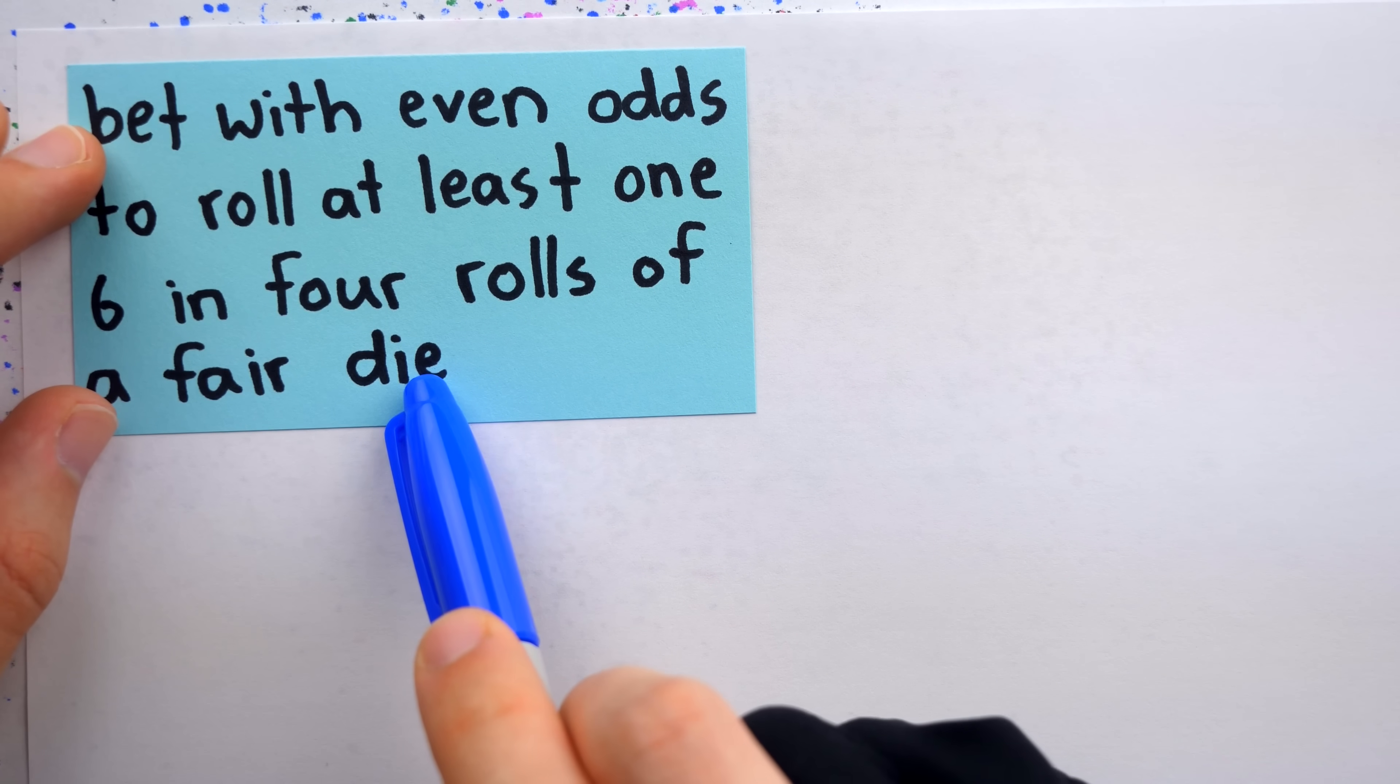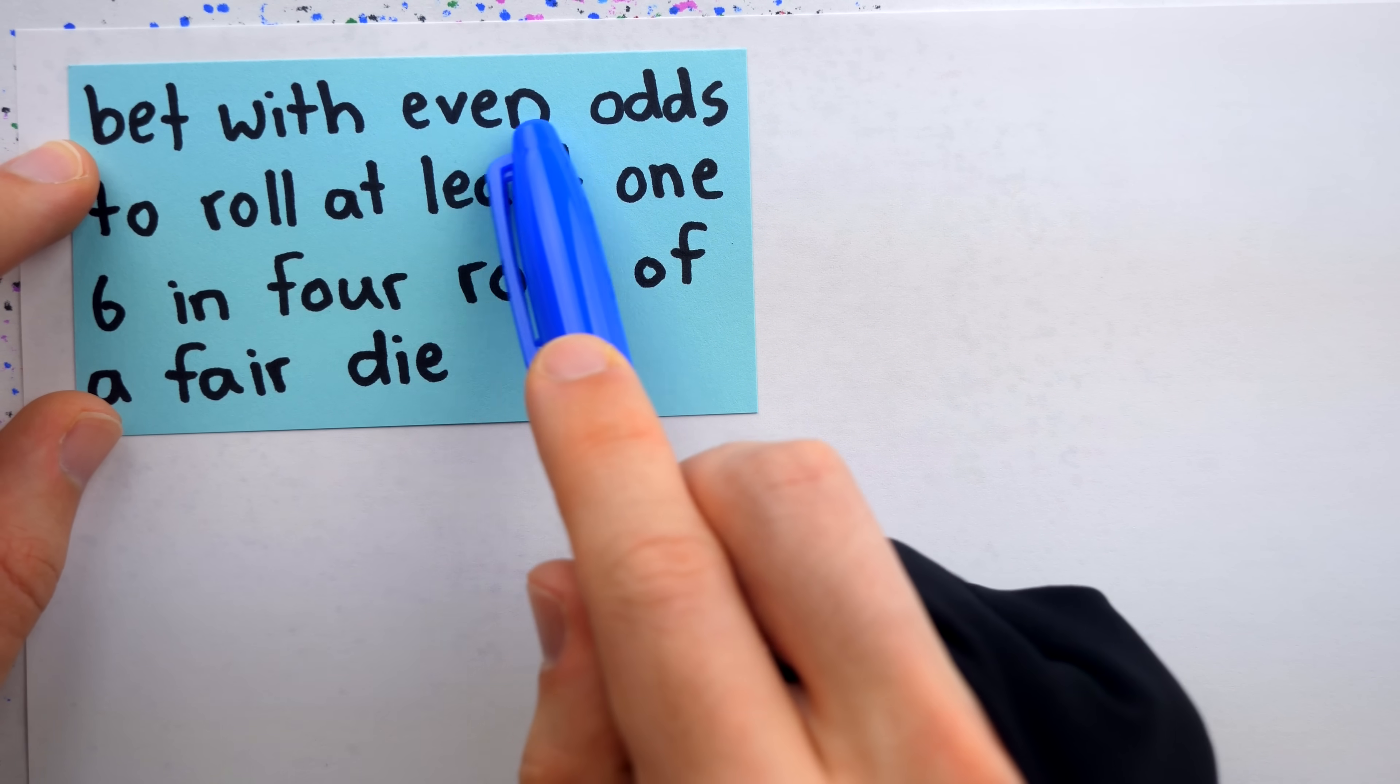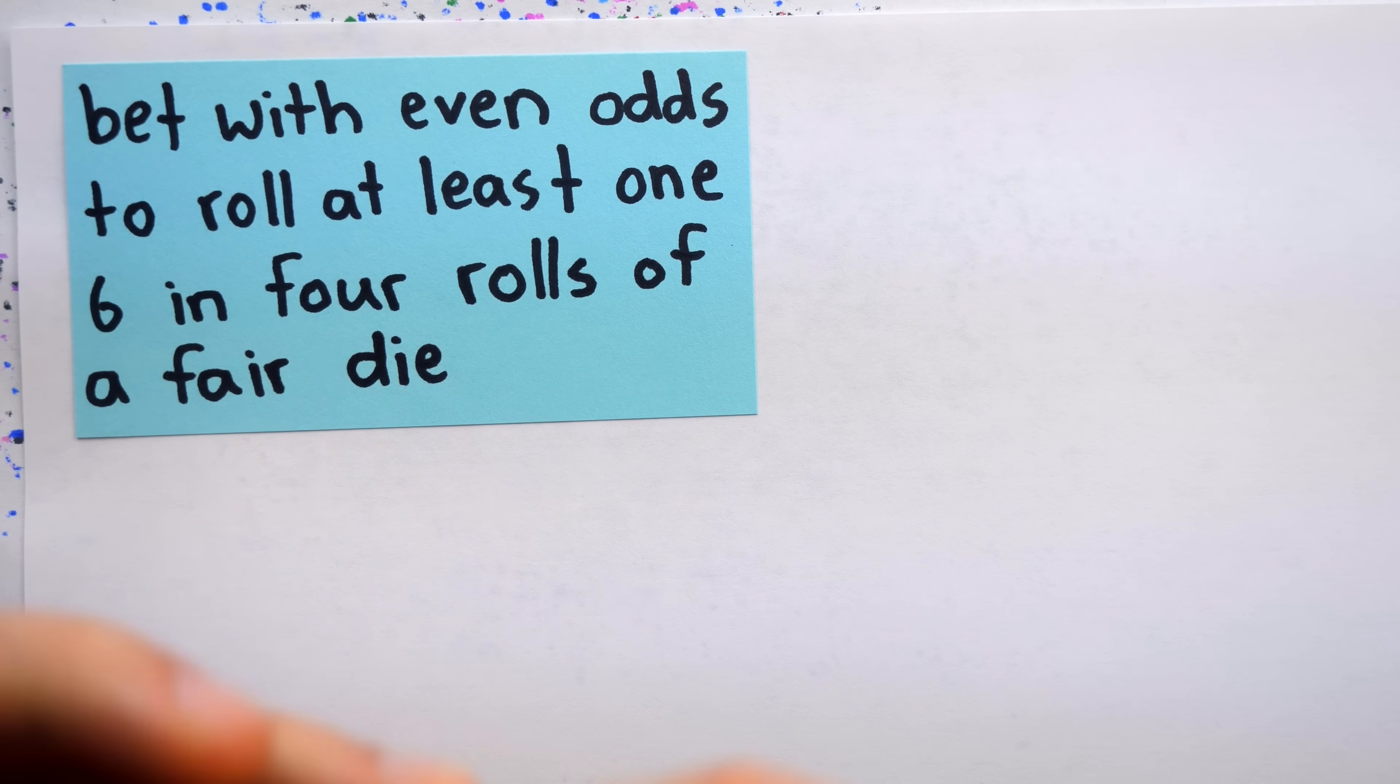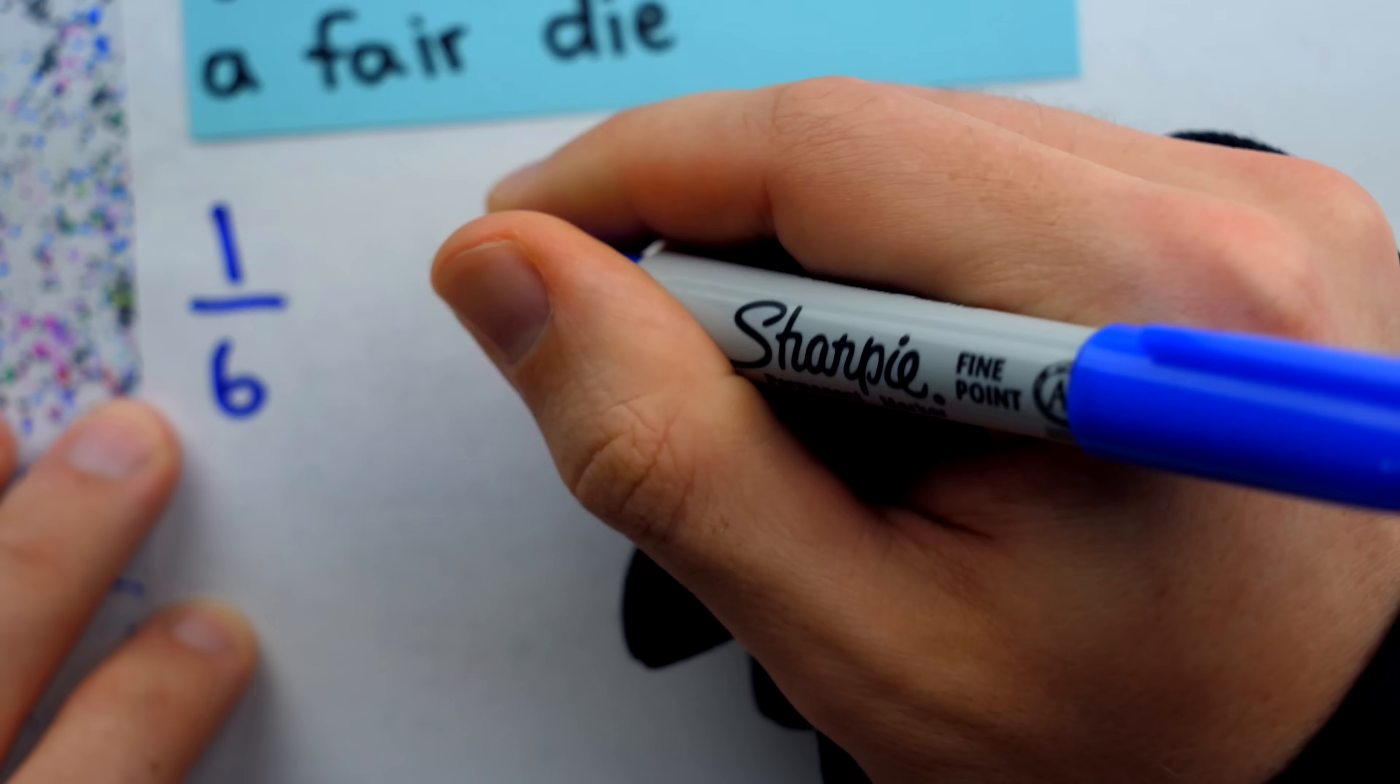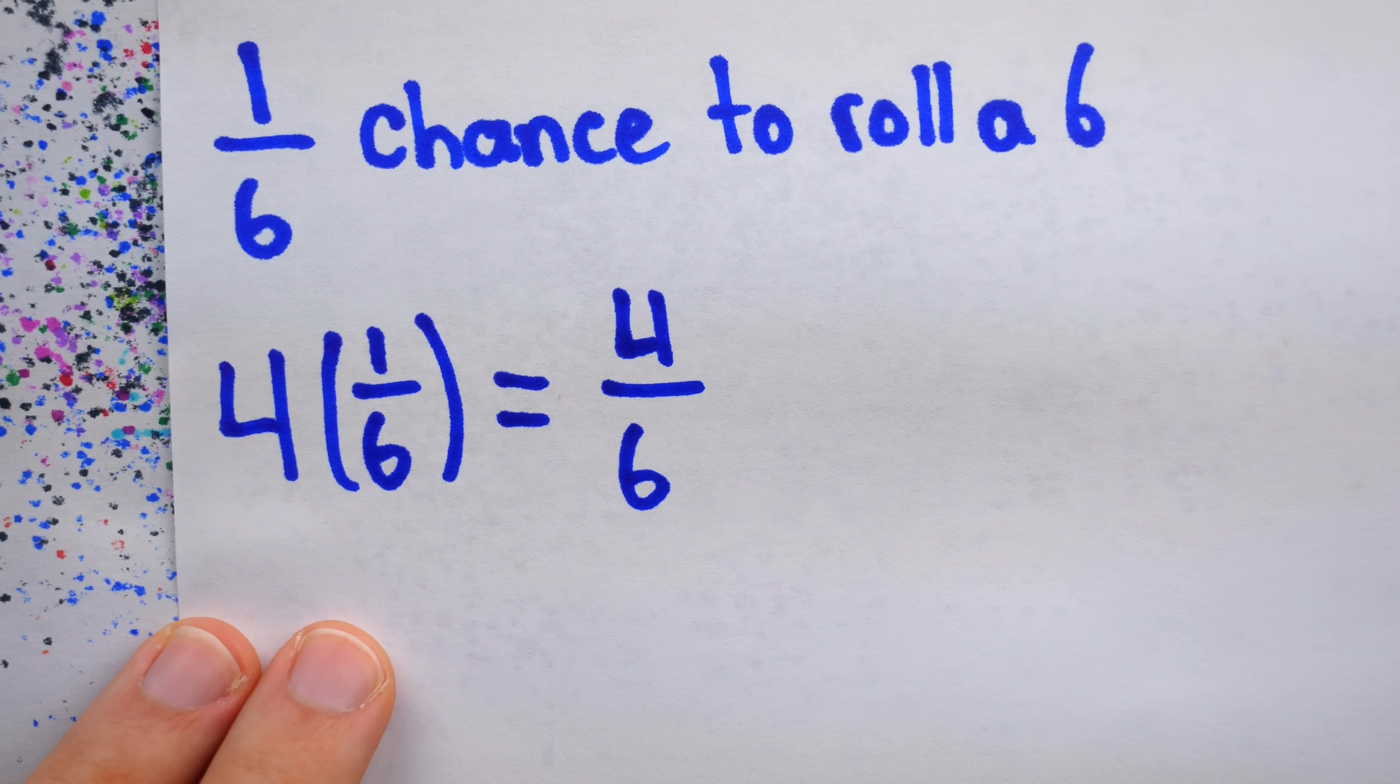As for the dice games, the first one went like this. A fair die is rolled four times, and the player wins if at least one six comes up in those four rolls. They play this game with even odds, meaning their winnings will equal the amount they wager. So if Demirais bet one franc and won the game, he'd get his franc back, plus an extra one for his wager. And Demirais was happy to play this game an awful lot, because the way he saw it, one die had a one in six chance of coming up six. So then he figured if the die is rolled four times, then there is a four out of six chance that at least one six will come up in those four rolls.